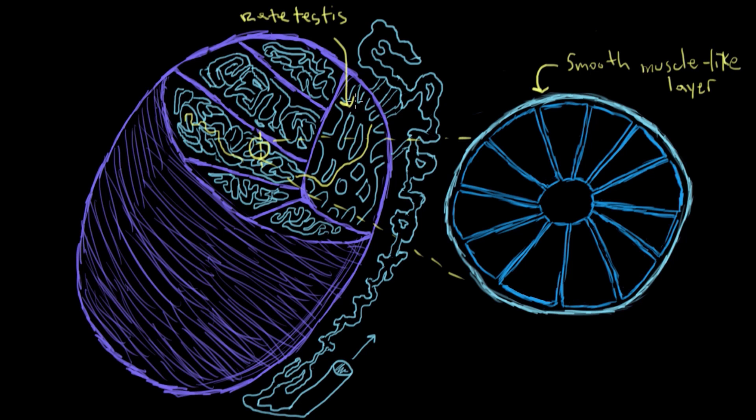After the rete testis, they drain to the epididymis where they hang out to mature and be stored for a while. So that's just a little bit on peristalsis and the movement of the sperm through the tubes. But back to the cross-section here.